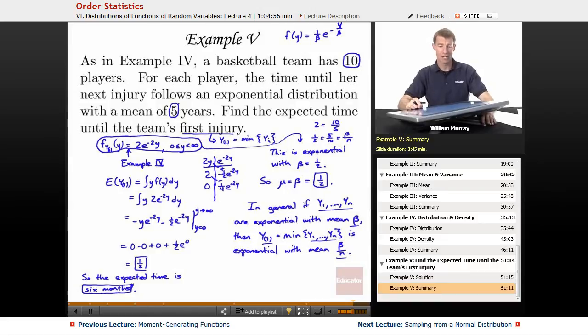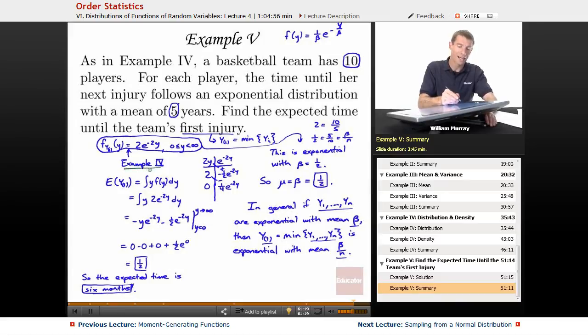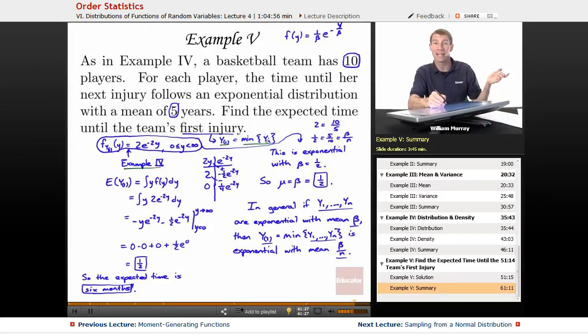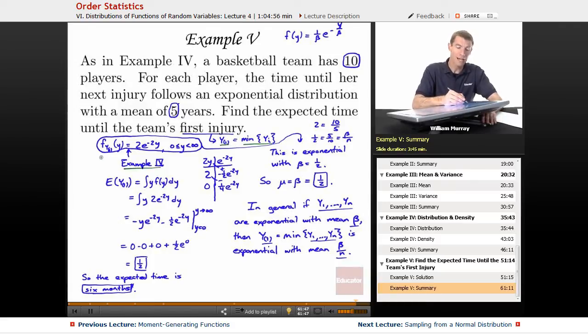That wraps up example five. Let me review the steps here. The key step here came from example four, where we identified Y1 is the minimum of these YIs. Remember, YI is the time for each player to get injured, which hopefully is long. Y1 is the first player to get injured. So Y1 is what you're worried about as a coach. You don't want any of your players to get injured, so you worry about when it will be until your first player gets injured and maybe forces you to change your team strategy. We calculated the minimum, and back in example four we calculated the density function for the minimum as 2e to the negative 2y.